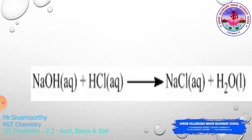Here is one simple example for the neutralization reaction. There are two reactants: one is a base and another one is an acid. Sodium hydroxide plus HCl gives sodium chloride and water. The formula of sodium hydroxide is NaOH, and the formula of hydrochloric acid is HCl, which gives NaCl — table salt, or sodium chloride — and water as a byproduct. This is the best example of a neutralization reaction.